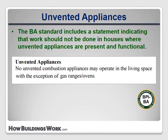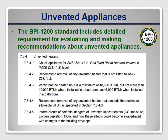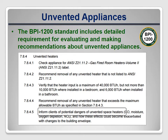The BA standard includes a statement about unvented combustion appliances. It implies that contractors should not complete any weatherization work in houses where the customer is unwilling to disable or remove a functioning unvented heater. The BPI-1200 standard also includes detailed requirements for unvented heaters, but they only relate to the audit. They include visual inspection procedures in Section 7.8, and a recommendation for removal for large or unlisted heaters. It also requires that auditors inform clients of potential dangers of unvented space heaters.